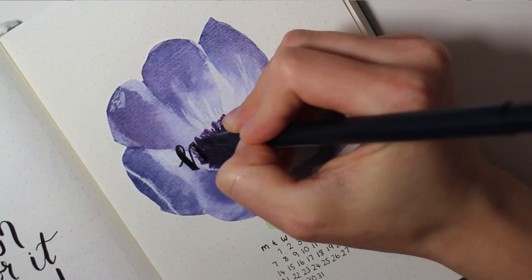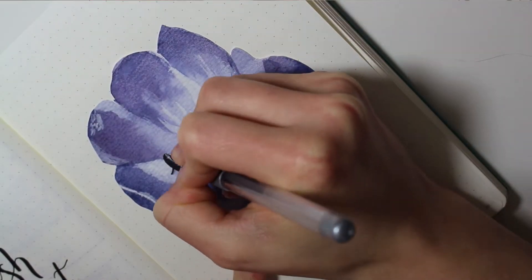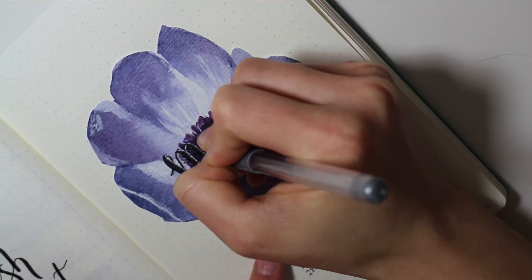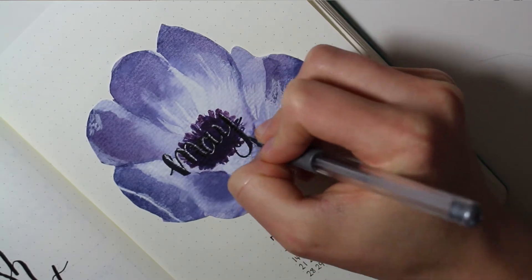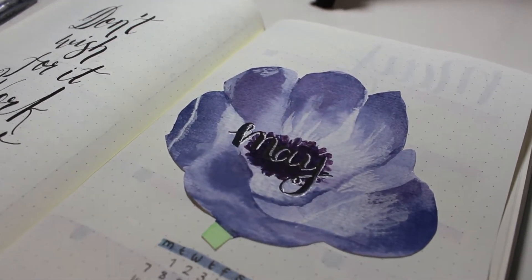So I just outlined it with a silver pen and I think it ended up looking really pretty. I really like how this month turned out. I'm not the best at art but I enjoy doing it so I feel like it doesn't really matter.